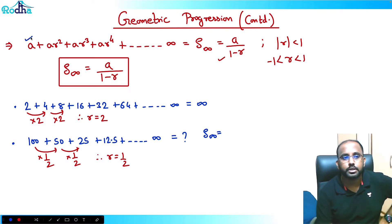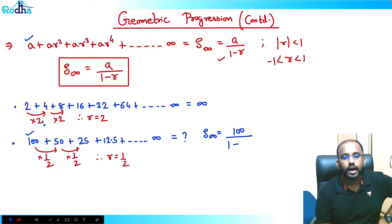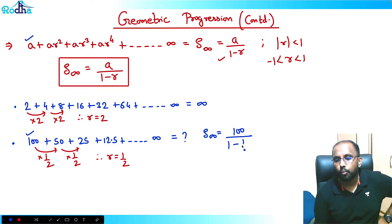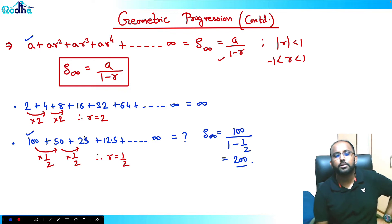S∞ = a / (1 - r). The first term a is 100, and r is 1/2, so S∞ = 100 / (1 - 1/2) = 100 / (1/2) = 200. So the sum equals 200.